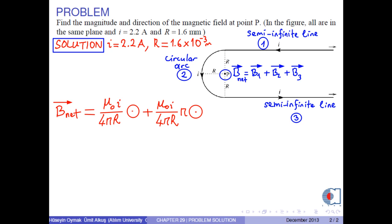The magnetic field due to semi-infinite line is again mu 0 times i over 4 pi r. The direction is out of the screen.